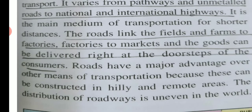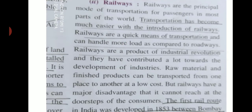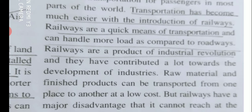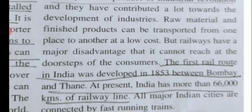The major advantage of road transport is that it is the only mode by which we can reach hilly and remote areas. Railways also play a very important role - through railways we can transport heavy goods very easily from one place to another. The first railway was developed between Bombay (now Mumbai) and Thane, and today the railway network is about six thousand kilometers connecting all major cities.